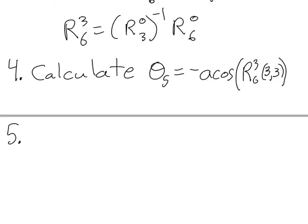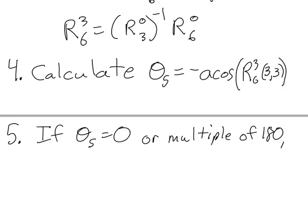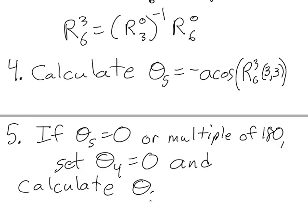In step five of the procedure, we have to start by doing this. We're going to check to see if theta five that we got from step four is equal to either zero or a multiple of 180. If theta five is either zero or a multiple of 180, we can then set theta four equal to zero and calculate theta six equal to the arc cosine of R36 element one, one.